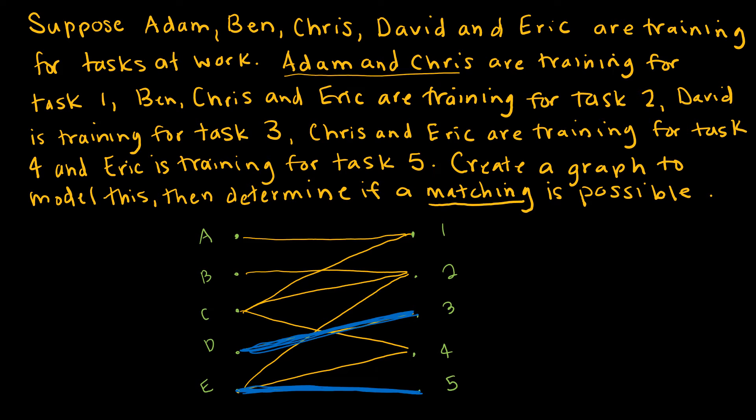So David and Eric are out of it. And now I'm looking at Adam, Ben, and Chris and what would be the best place for them. Well, for task 4, the only people who knew how to do it was Chris and Eric. And Eric's already taken. So Chris gets task 4. And so now can I assign Adam and Ben? Sure. I could either assign Adam to 1 and Ben to 2. Or I could assign Adam to 2. Oh, no, I'm just kidding. No, that is the only one. I thought Ben also knew how to do 1. So yes, I can do a matching. That is my matching. So Adam would do task 1, Ben would do task 2, Chris task 4, David task 3, and Eric task 5.